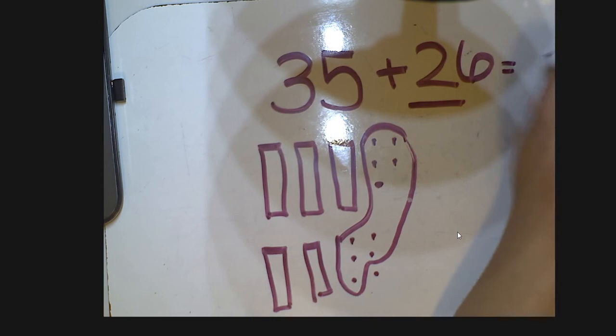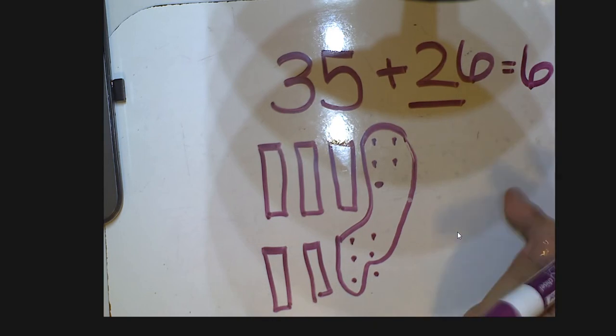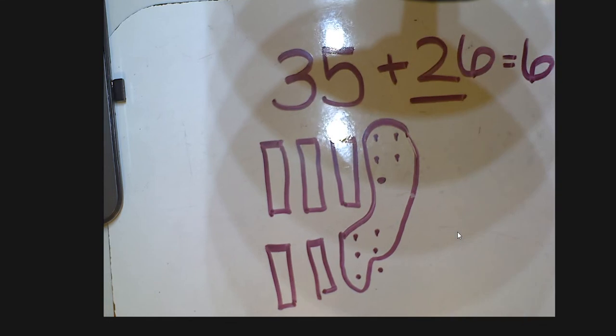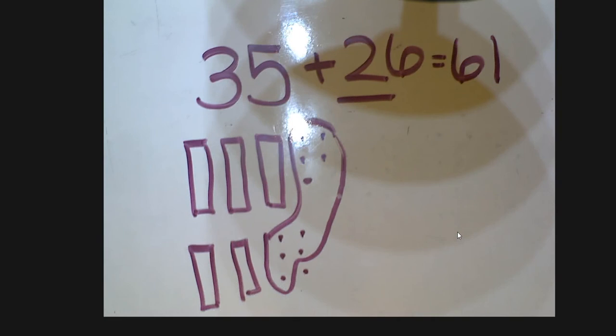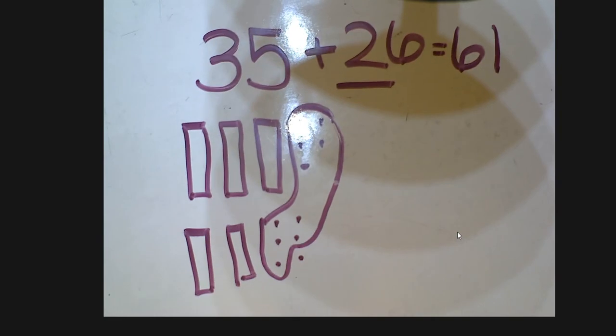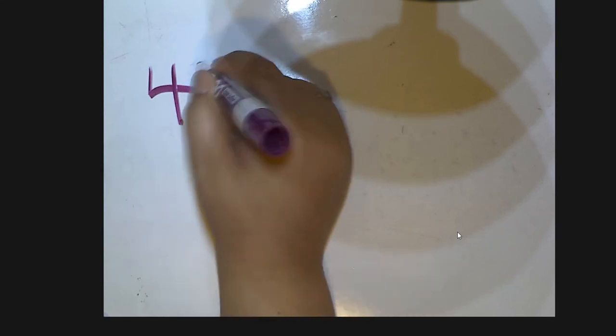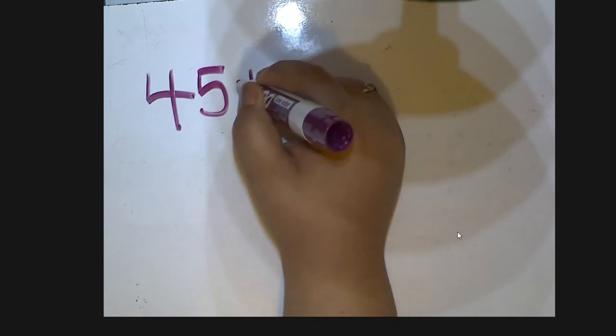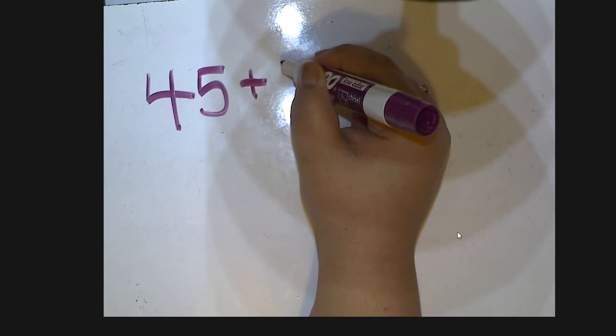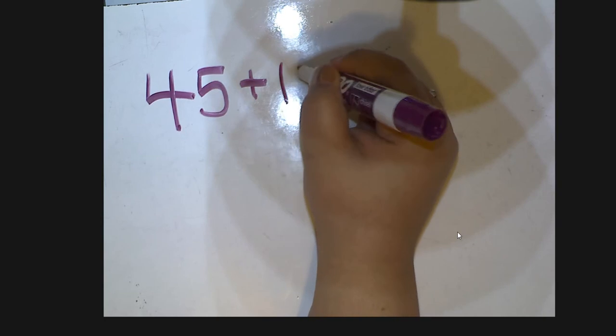Okay, let's try one more, and if you can, I want you to try this on your own on a piece of paper or a whiteboard. We're gonna do 45 plus 12. Don't forget to model it and then add together. Go ahead and pause this video until you're finished, and when you're done you can play it again to double-check.